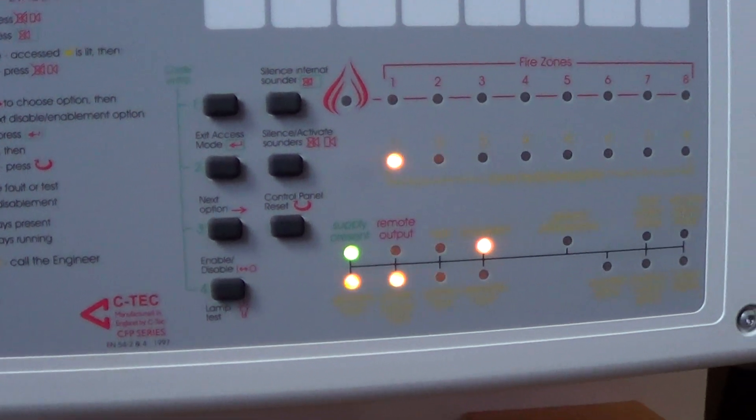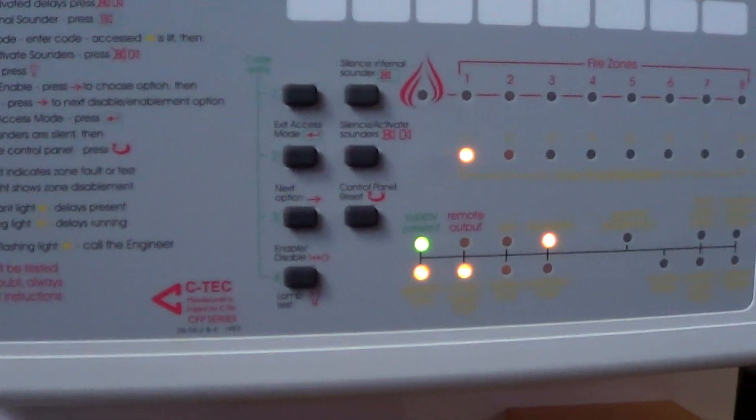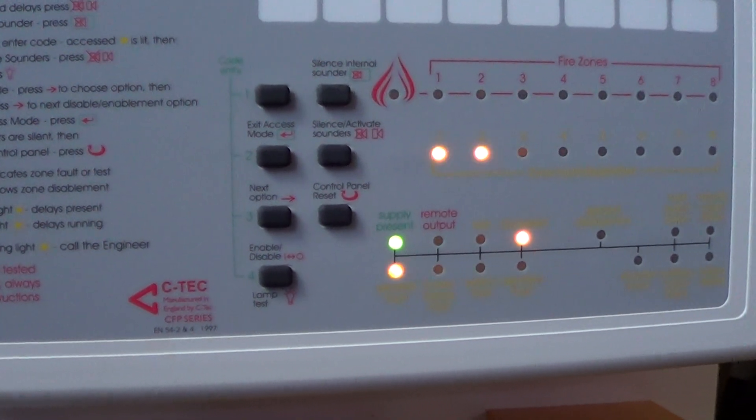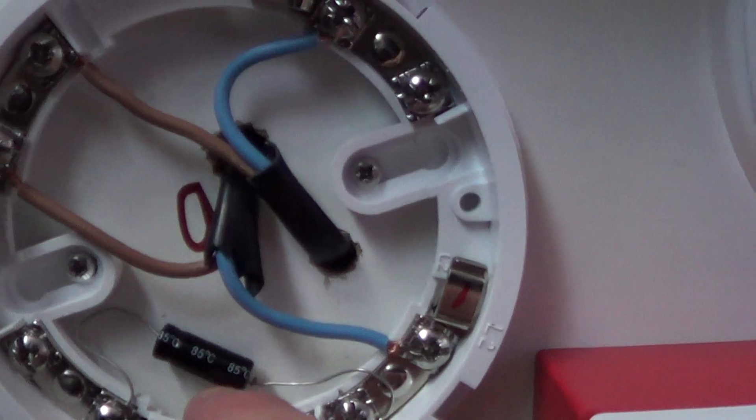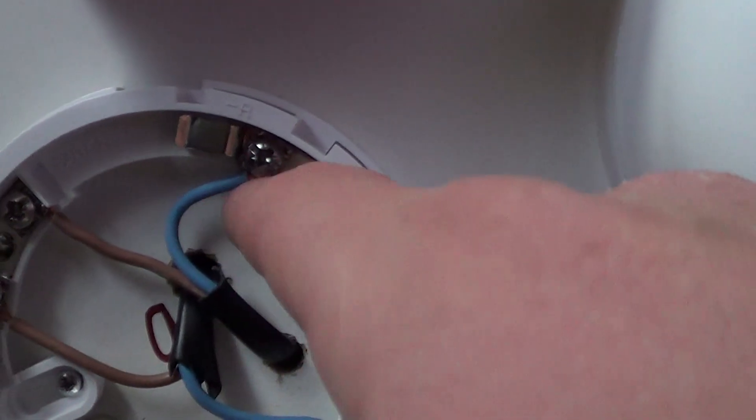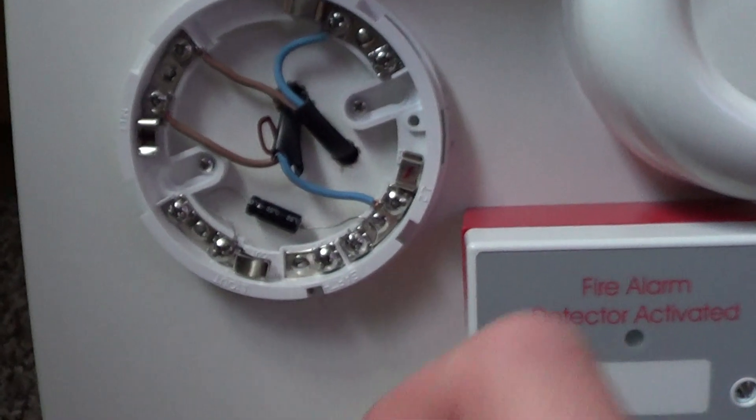The fault light will come on in a minute. Try reset the panel, see if that makes it quicker. See, there we are. This is the wiring in the detector head. This is the end of line resistor, this is the zone wiring here, positive and negative, and this is the remote output indicator here which the smoke detector turns on.